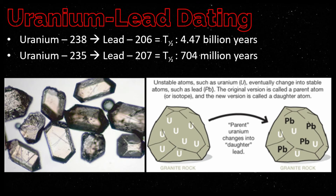Uranium-lead dating is usually performed on zircon crystals. When zircon forms in an igneous rock, the crystal readily accepts atoms of uranium but rejects atoms of lead. So if any lead is found in a zircon crystal, it can be assumed that it was produced from the decay of uranium.